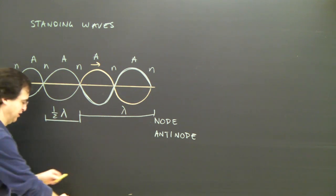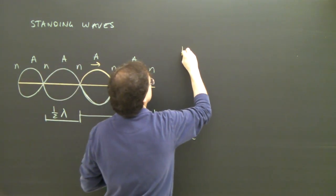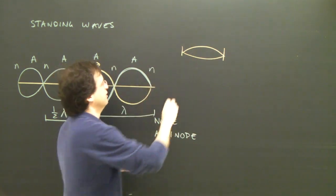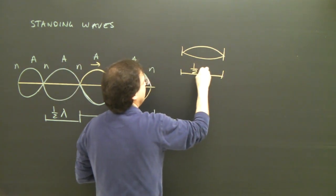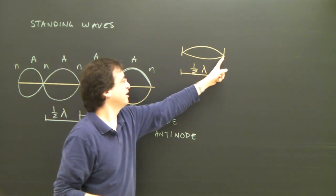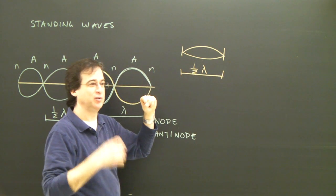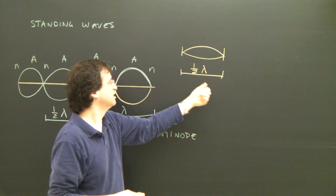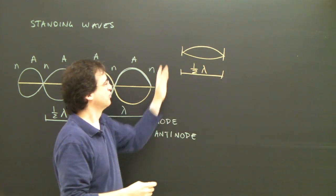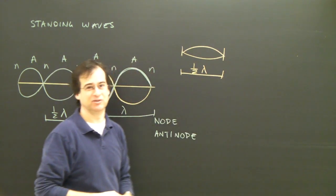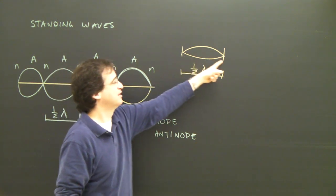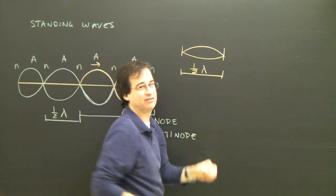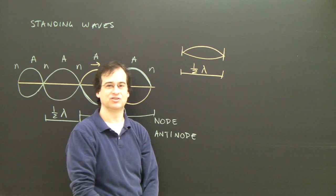So if we have a guitar string and it's vibrating simply up and down, we know that the length of the string is one half lambda. So if the guitar string is 30 centimeters long and you pluck it, how long is the wave making that sound? Well, if it's 30 centimeters from node to node, that's half a wavelength. So the wave must actually be double that — 60 centimeters. When I pluck a guitar string and get this vibrating pattern, if the string is 30 centimeters long, I know the wave is 60 centimeters, and I need that number to do calculations for that string.